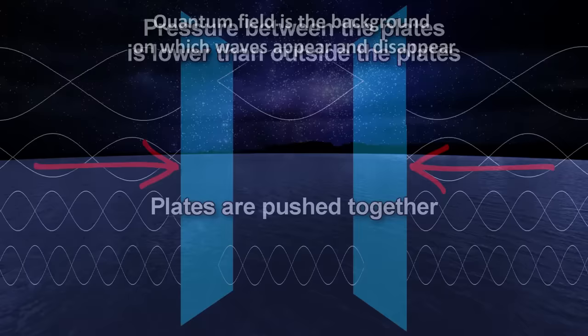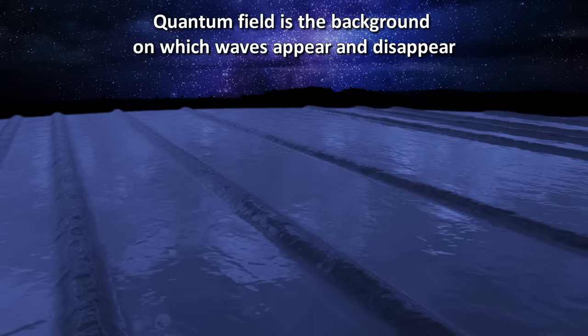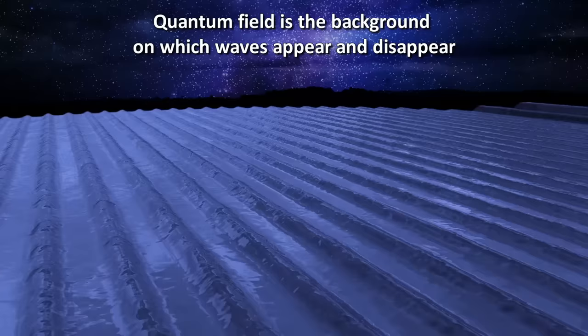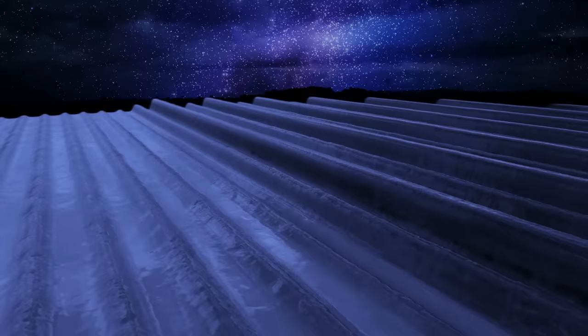The quantum field is like the sea. It's the background on which waves appear and disappear. And just like energy can create waves in the sea, the energy added to the field generates particles, which we can observe. So in quantum field theory, we have a field that is never still, never empty, and we can create a particle if we have the exact amount of energy needed.